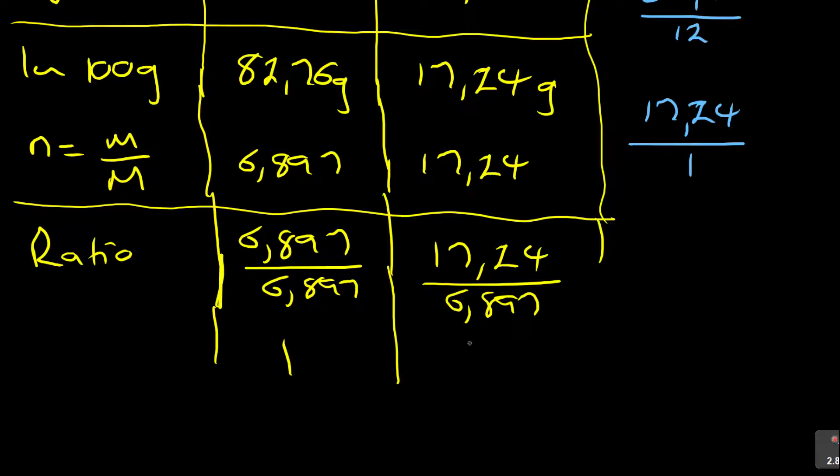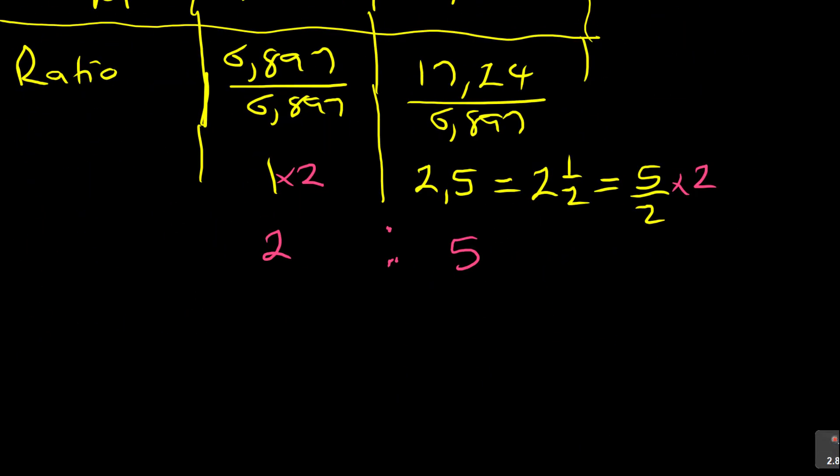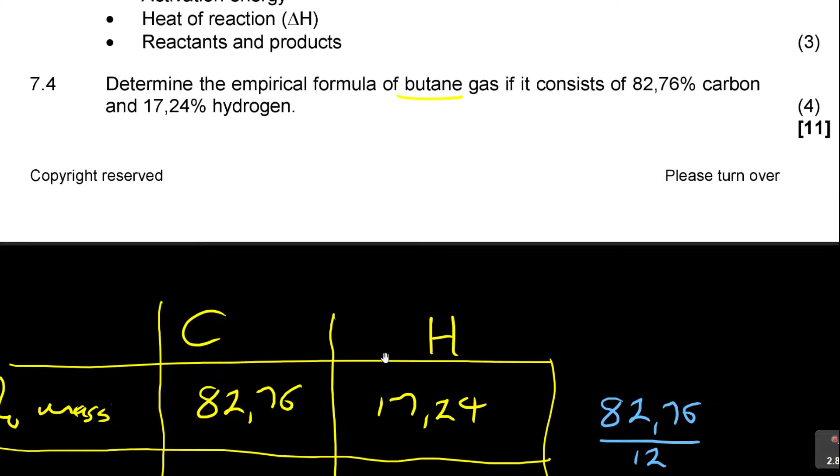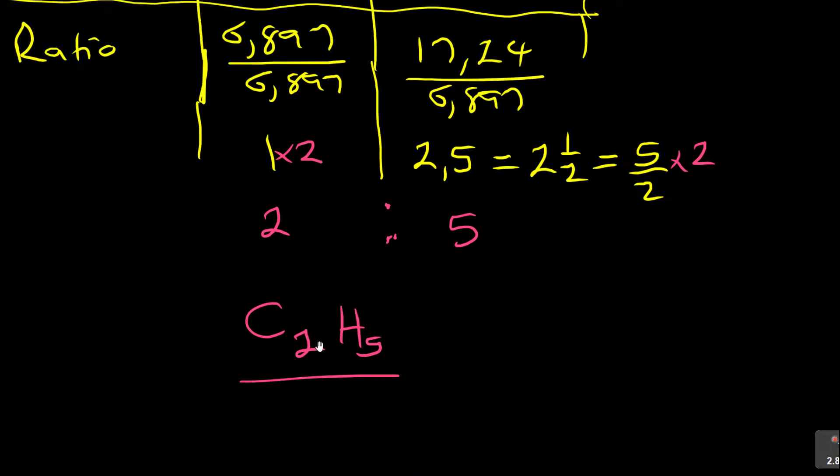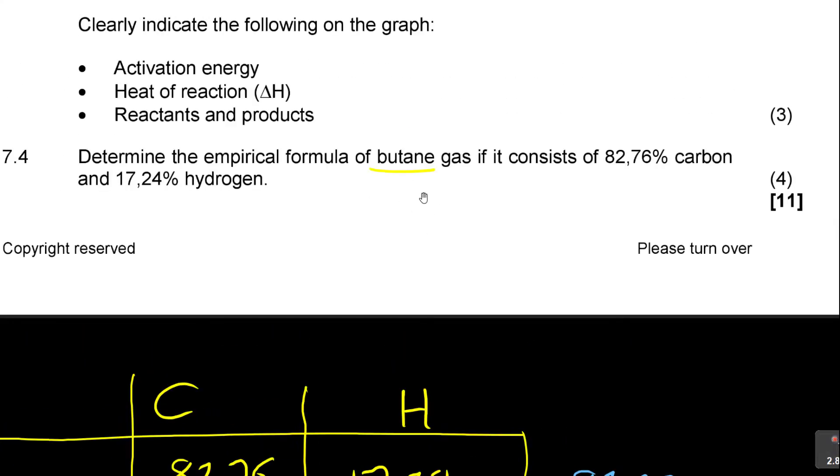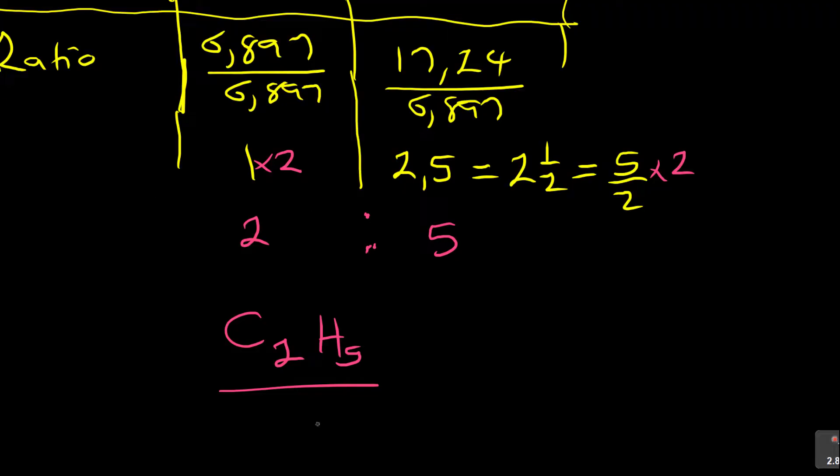So whenever you get a number in the middle like that, 2.5, remember 2.5 is same as 2 and a half, which is same as 5 over 2. You must respect that. That 5 over 2, then you multiply by 2, so that you've got 2 is to 5. You understand? Because it's in the middle. That's why now, when you come here to say CH, it will be for C, it's 2, for H is 5. Determine the empirical formula. This is the empirical formula of butane, C2H5. The actual molecular formula, though, if you know, it's C4H10. But this was the empirical formula. They didn't want us to find the actual formula.